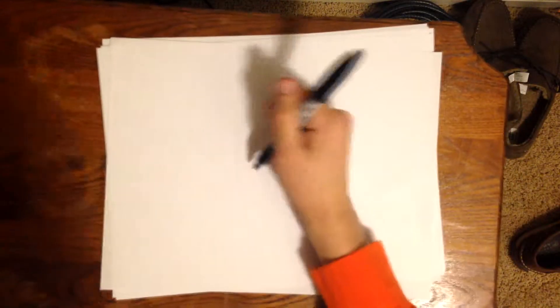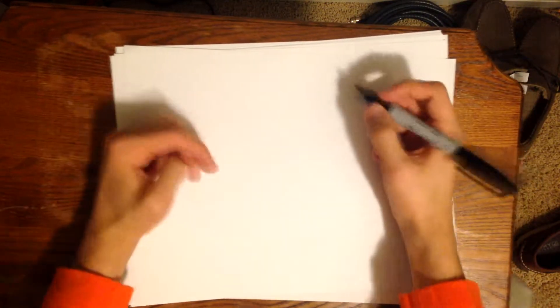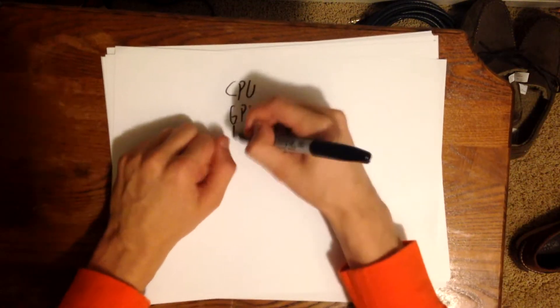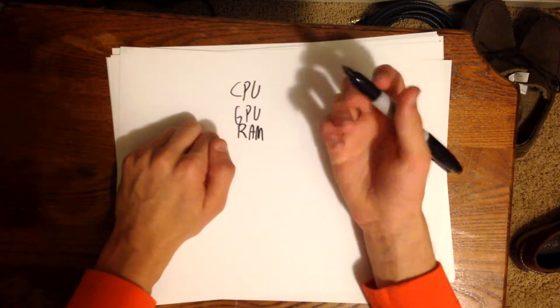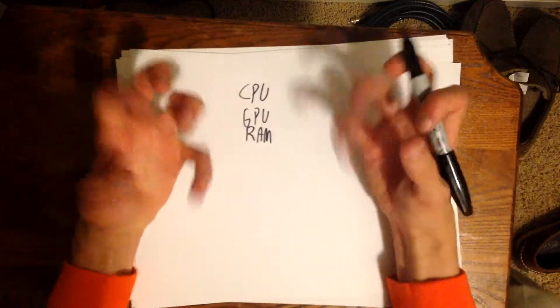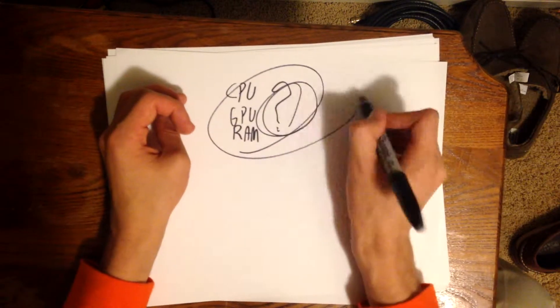Hello, YouTube. Today we're going to be learning about the anatomy of computers. What we're going to do is talk about how a computer works. I'm basically going to explain to you what people mean when they talk about CPU and GPU and RAM and all that other good stuff that you just don't know what it actually is. And I'm going to tell you exactly what it is.